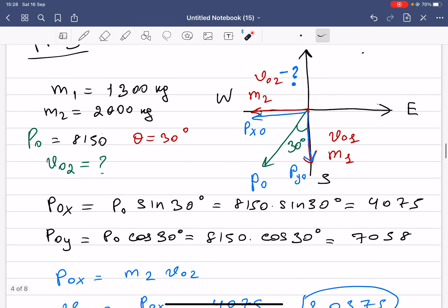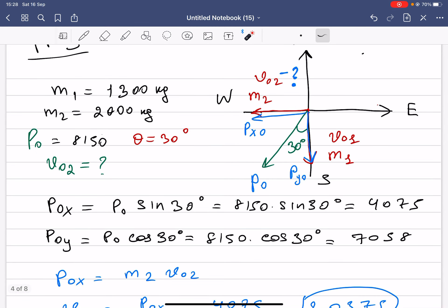First of all, the total initial momentum is given, so let's resolve this initial momentum into two components, x and y components. P_x initial will be P_initial multiplied by sine 30 degrees.